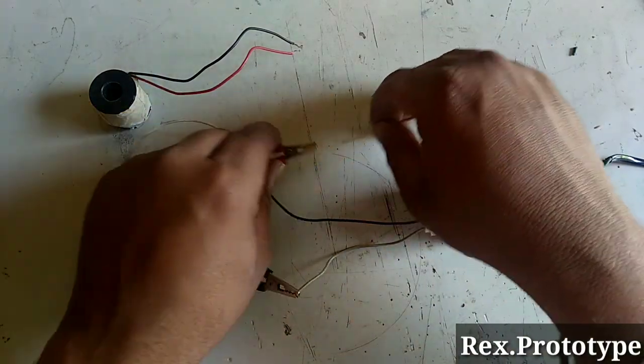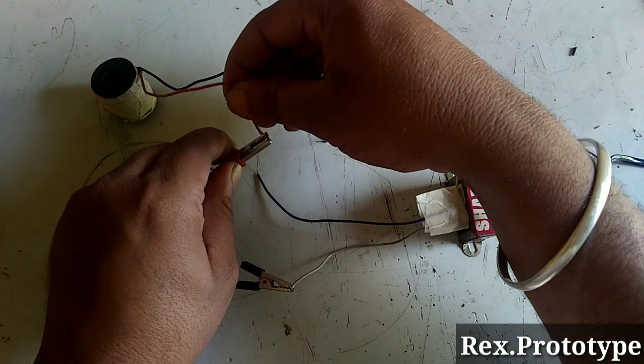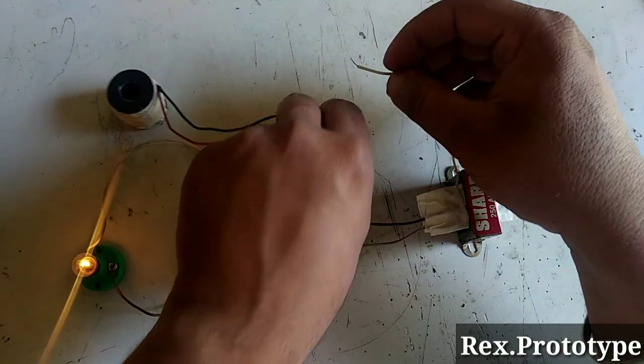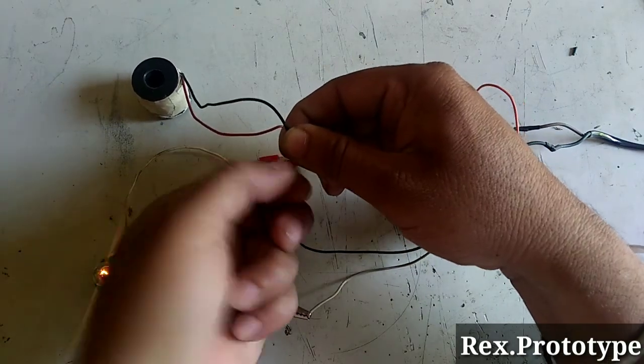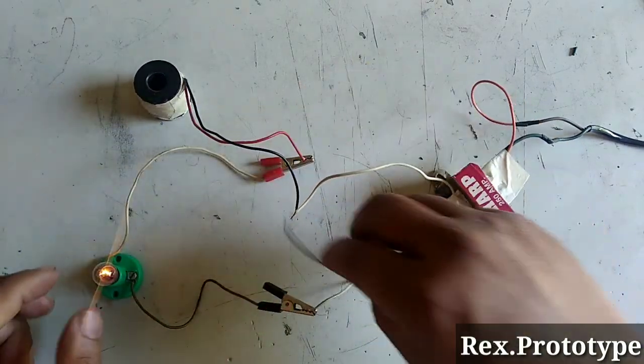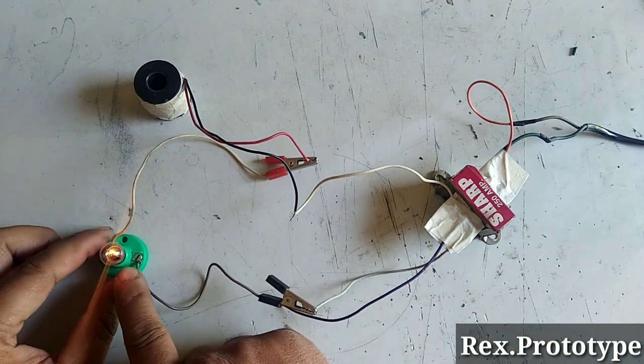Now we will connect the inductor in series with the transformer. Here you can see the brightness of the bulb has been reduced.